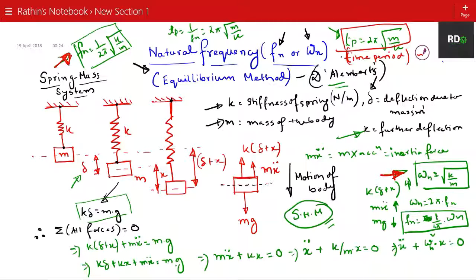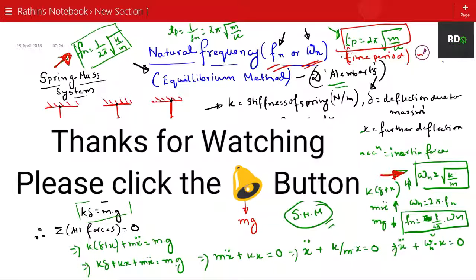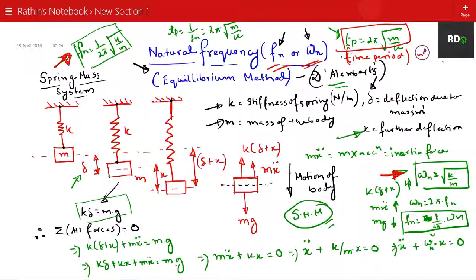We have determined omega n (circular natural frequency), fn (linear natural frequency), and the time period Tp using the equilibrium method, that is D'Alembert's principle. I hope you get the concept. Thank you so much for being with me, for liking and sharing my content. See you again in the next video. Bye-bye.